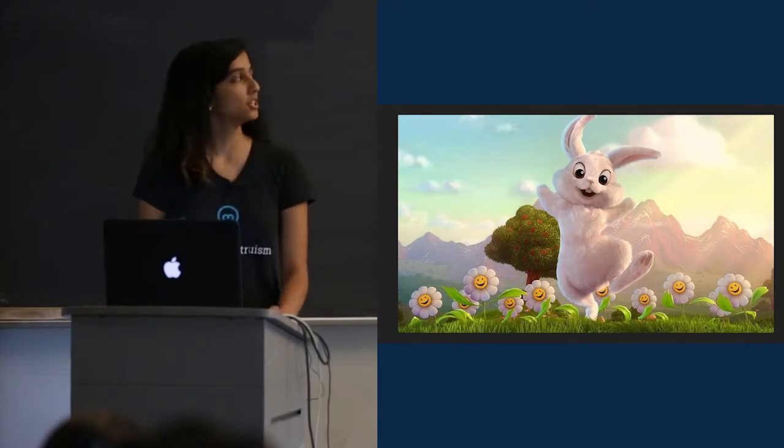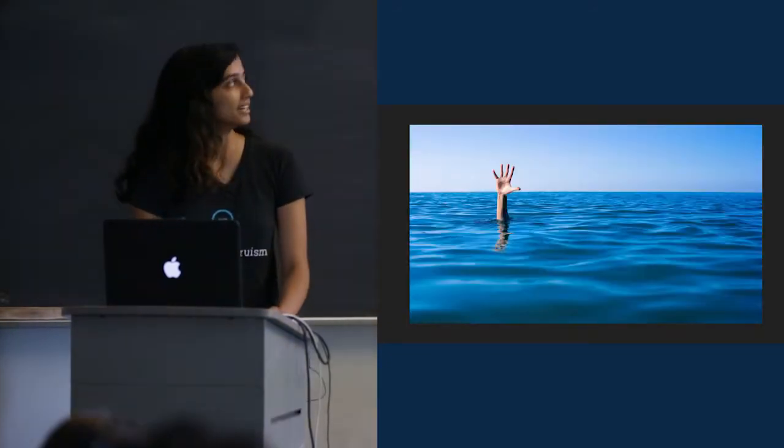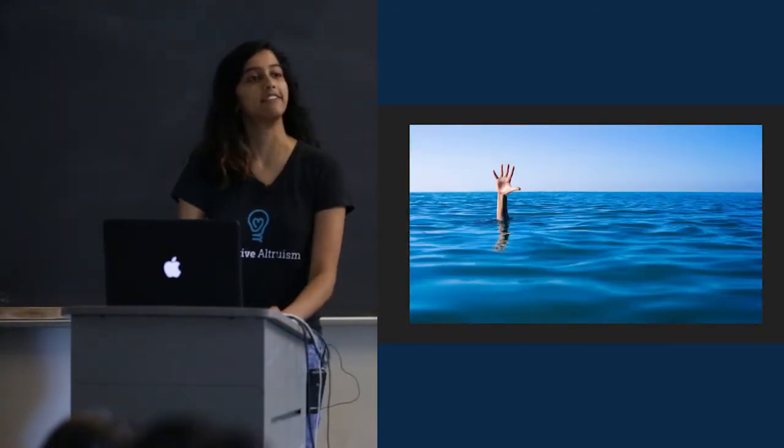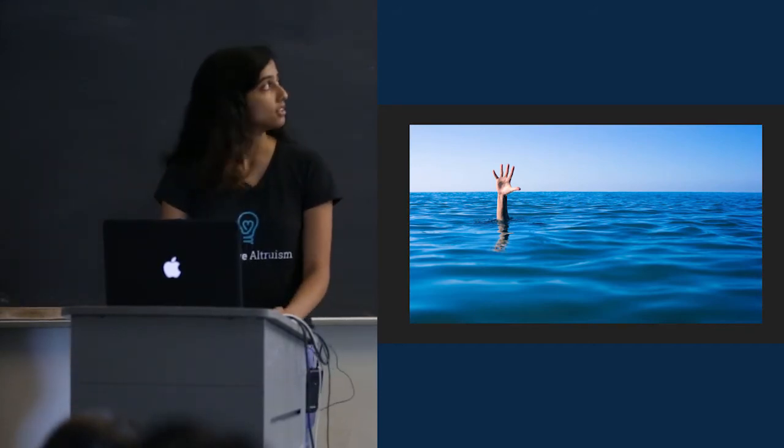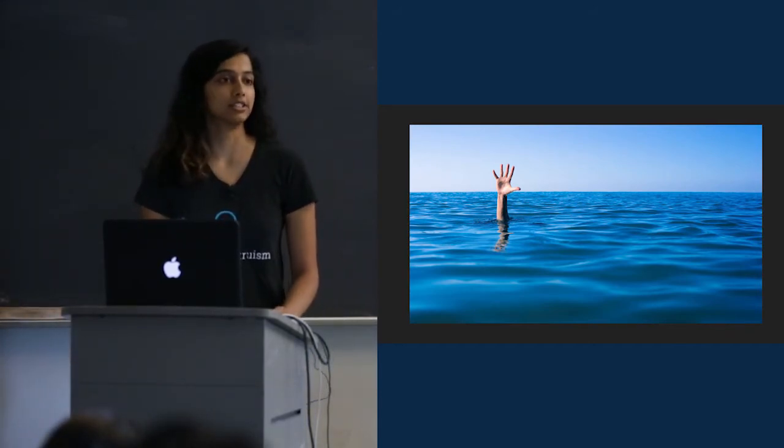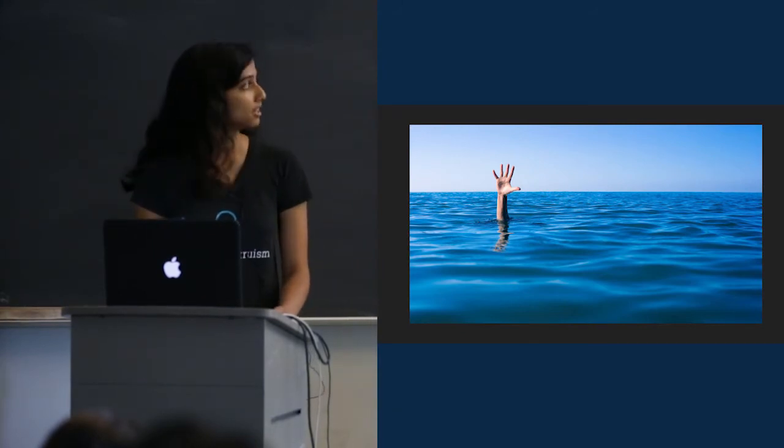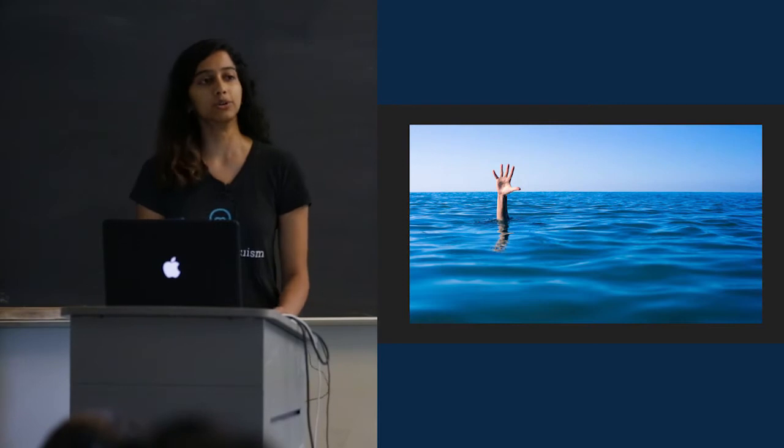In that book, Peter Singer argues that if you would ruin an expensive suit to save the life of a child drowning in a shallow pond, then you should give up a few thousand dollars to save the life of a child dying of a preventable disease. Those two situations were no different.